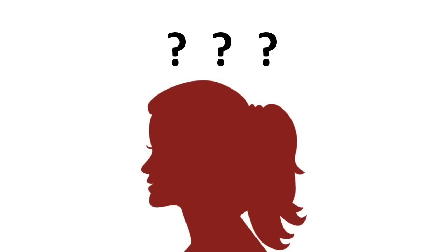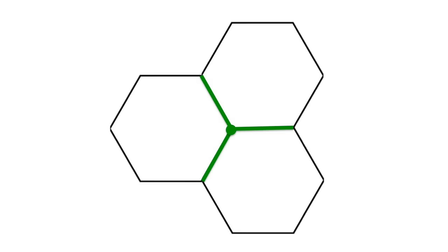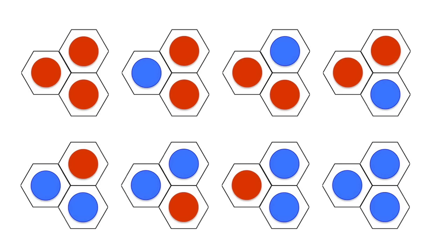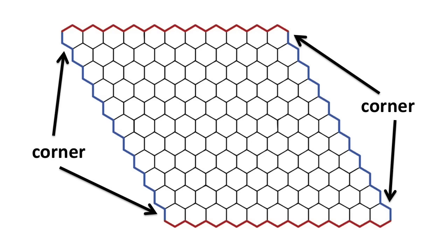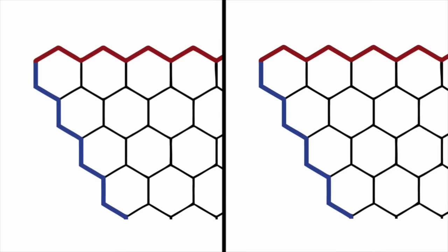Now we just need to show that there's always a chain of highlighted edges that connects two corners. How do we do this? First, we need to understand what happens at the junction where three hexagons meet. Notice that there are eight ways to pick colors for the three hexagons. For any of these combinations, there are either zero or two highlighted edges meeting at the junction.